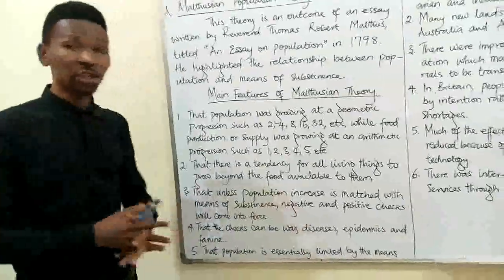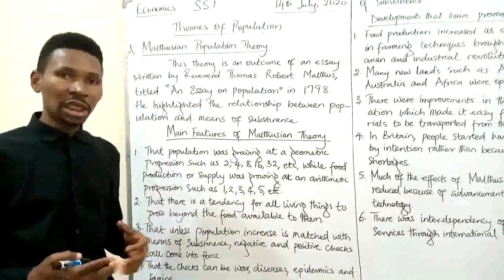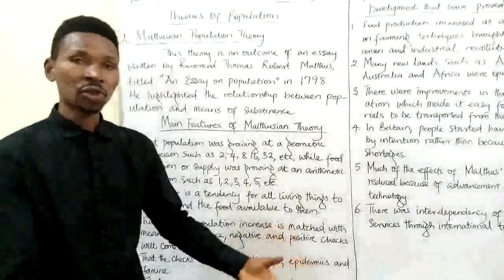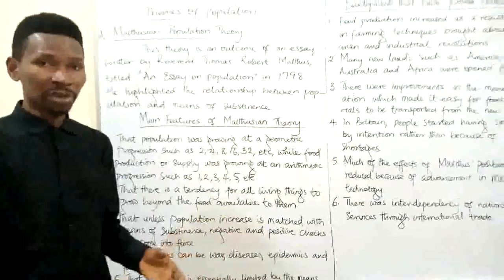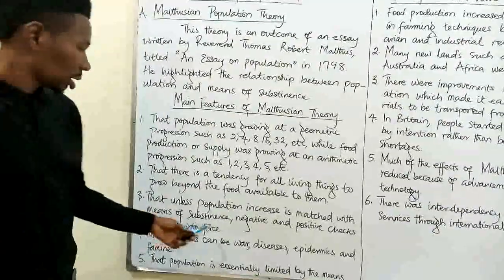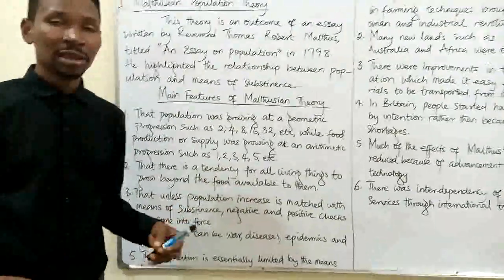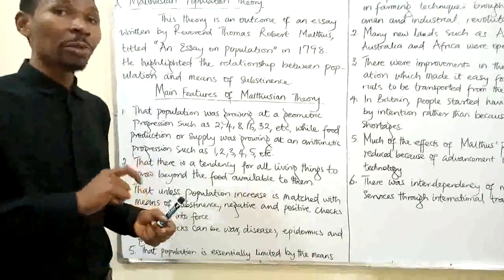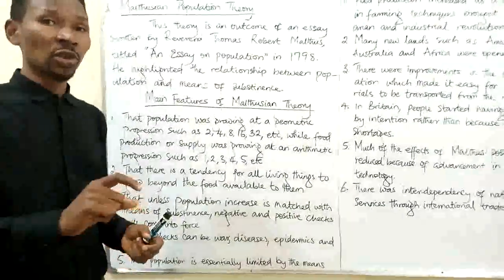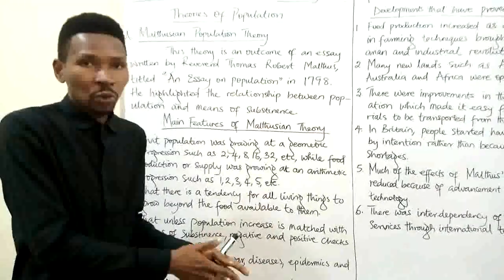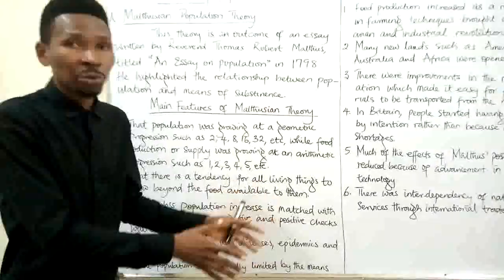negative and positive checks will come into force. What Malthus was trying to say is that if population growth is not proportionate — not equal with the growth also in food production — there will be problems such as war, epidemics, famine, etc. These things are what he calls positive checks. They will come into play to compel population to reduce in order to match up with the available means of sustenance, in other words, to match up with food production.